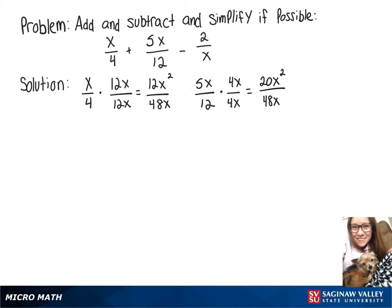Then our last fraction there, 2 over x, we'll multiply by 48 over 48, giving us 96 over 48x.